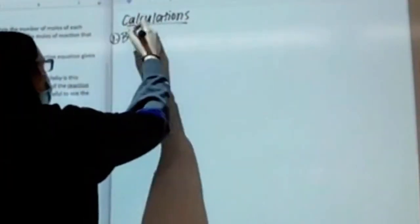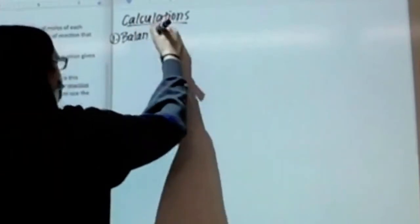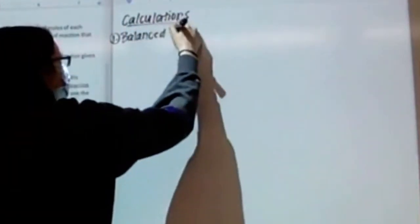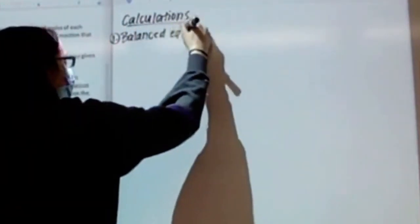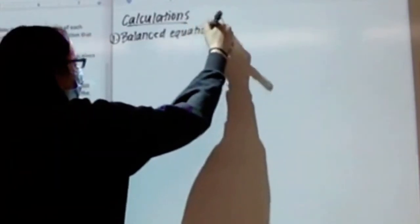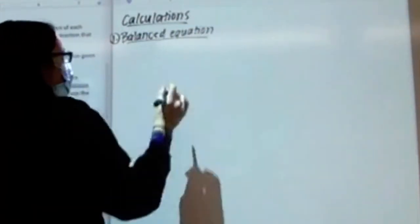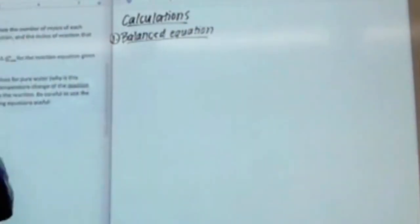Here's calculation one. I'm going to make sure I label this 'balanced equation,' and then I'm going to go ahead and write my balanced equation underneath it.